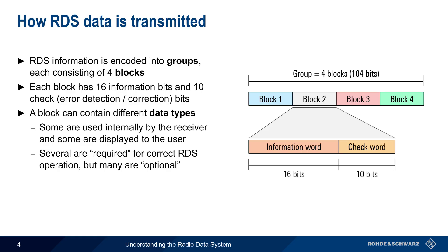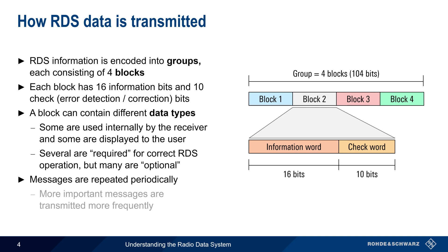Optional messages are ones that may or may not be transmitted by a particular broadcaster, or ones that may or may not be processed by a particular receiver. Most of the messages in RDS are repeated periodically, with more important messages being transmitted more frequently.